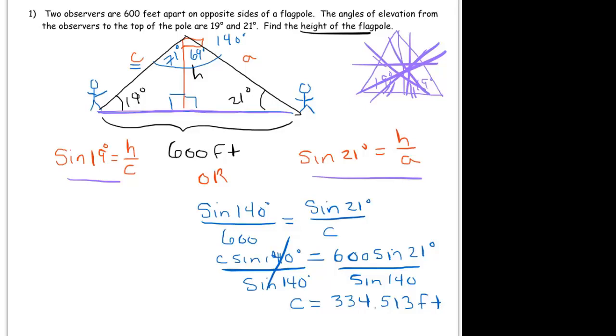All right, so remember that wasn't the goal. That was part of the goal. So now that we know C, we can make sense of this. So maybe I'll just label it up here just so we have it in the picture. 334.513. Now again, we could have solved for A using the law of sines, and then we'd be focusing on this. But at this point, we know that the sine of 19 degrees is equal to H over C, which we know is 334.513.